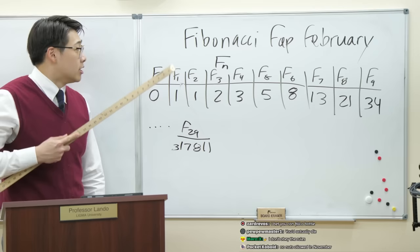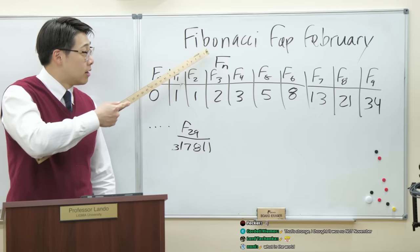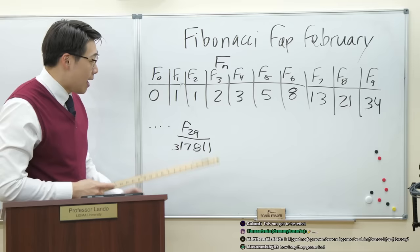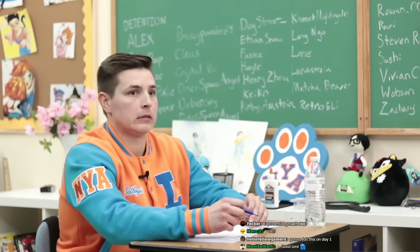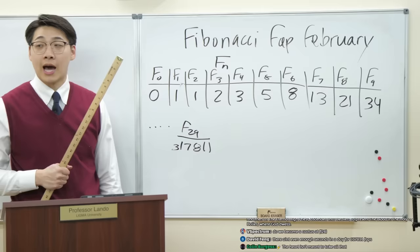So on the first day you fap once, on the second day you fap F of two which is also one, on the third day twice, fourth day F of four, sum of the preceding numbers, three. By the twenty-ninth, Fibonacci sequence number, it would be three hundred seventeen thousand, eight hundred eleven. So on the twenty-ninth day of Fibonacci Fap February you would have to fap three hundred seventeen thousand, eight hundred eleven times. Test of strength, of mental fortitude mainly.